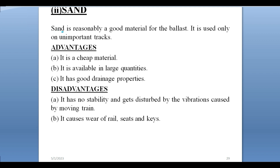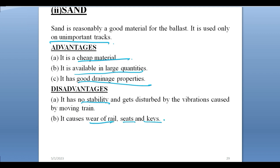Sand is reasonably a good material for ballast. It is used only on unimportant tracks. Advantages: It is a cheap material, available in large quantities, and has good drainage properties. Disadvantages: It has no stability and gets disturbed by the vibrations caused by the moving trains. It causes wear of the rail seats and keys.